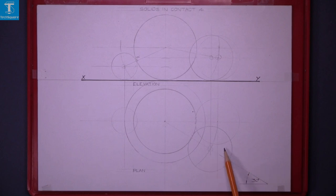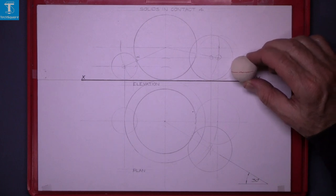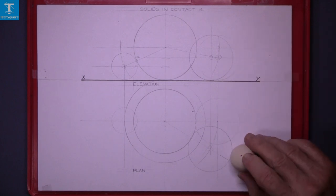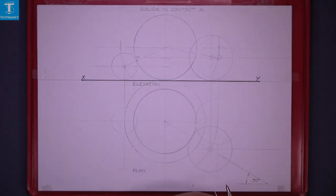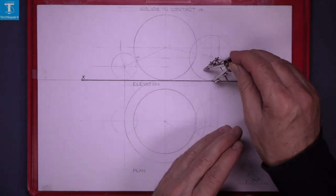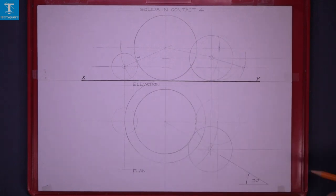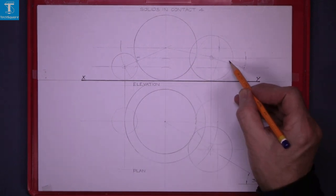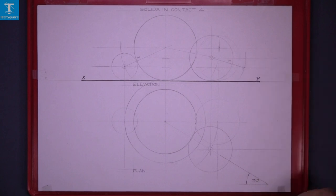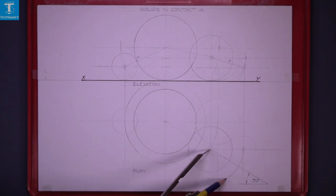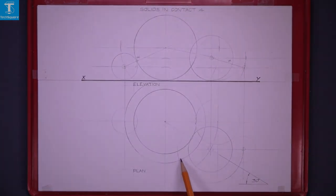Now we do the same with this one. Draw the small sphere in the elevation, get the plan of it, and rotate it around. Find the center as you did in Solids in Contact 2. That's the center. Join the center to get the point of contact — that's the point of contact there. Draw vertically down and that's the center for the plan. Rotate that center around and where those two arcs meet, that's the center for the small sphere.